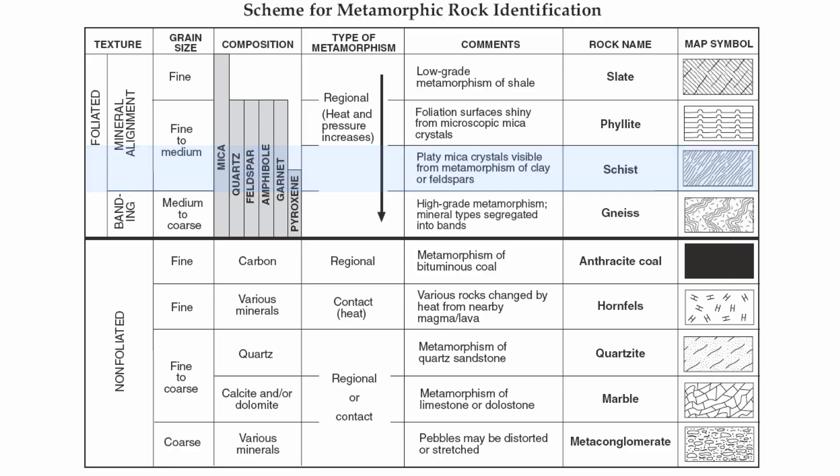You get the highest grade of metamorphism — that's going to be a rock called gneiss. Instead of getting mineral alignment, you have a type of foliation called banding. You have huge crystals here, all arranged in certain rows or bands within the rock.